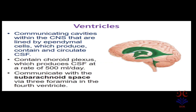What are ventricles? These are the communicating cavities within the central nervous system that are lined by ependymal cells, which produce, contain and circulate cerebrospinal fluid. These contain choroid plexus which produces CSF at a rate of 500 ml per day. These ventricles communicate with the subarachnoid space via 3 foramina in the 4th ventricle.